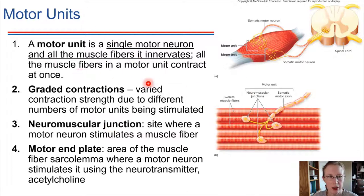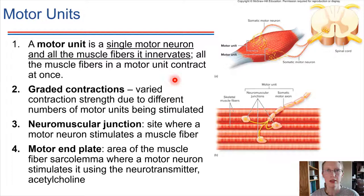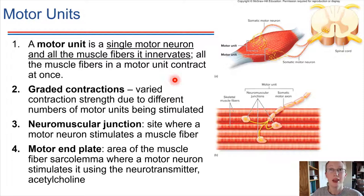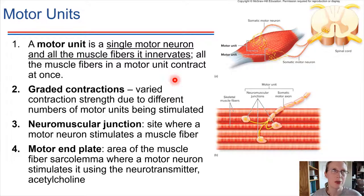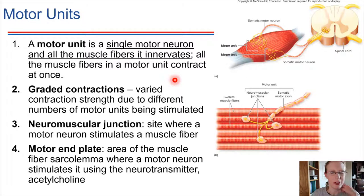The fact that we have motor units is useful. You might have multiple neurons that innervate different cells in a muscle. If you need just a very slight contraction — like picking something up that's not very heavy — only some of those motor neurons will be activated. If you're picking up something really heavy, more motor units can be activated. This allows for a graded contraction; we can vary the strength of the contraction through neural control.